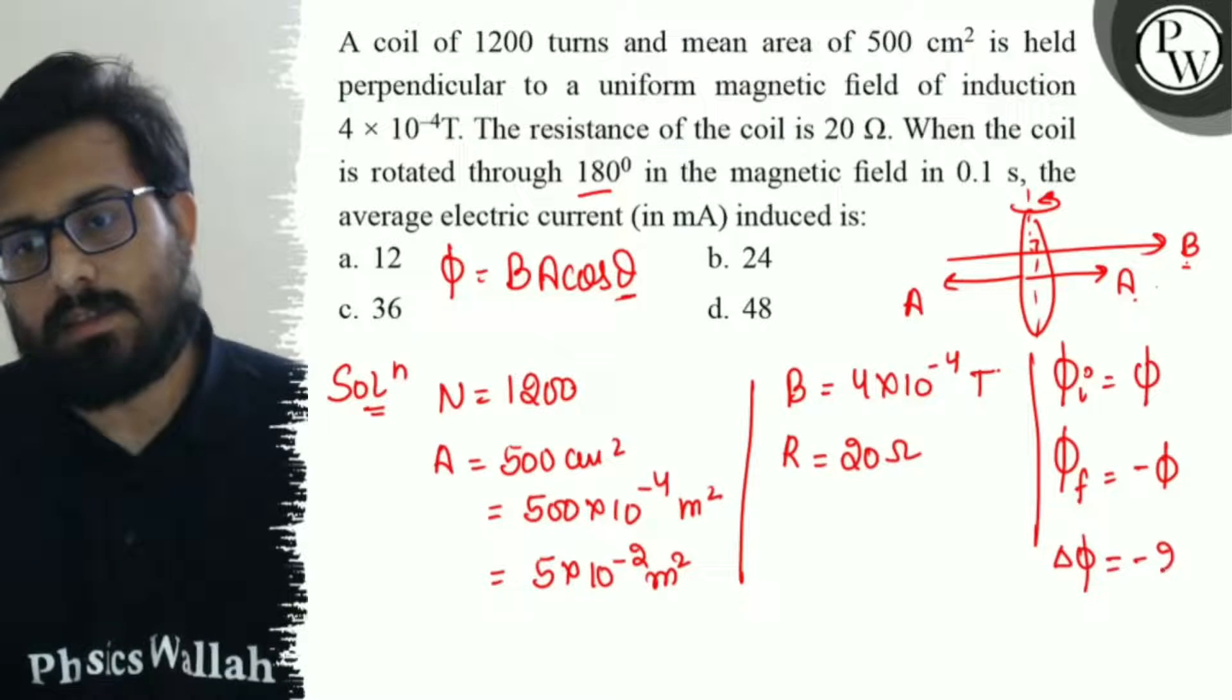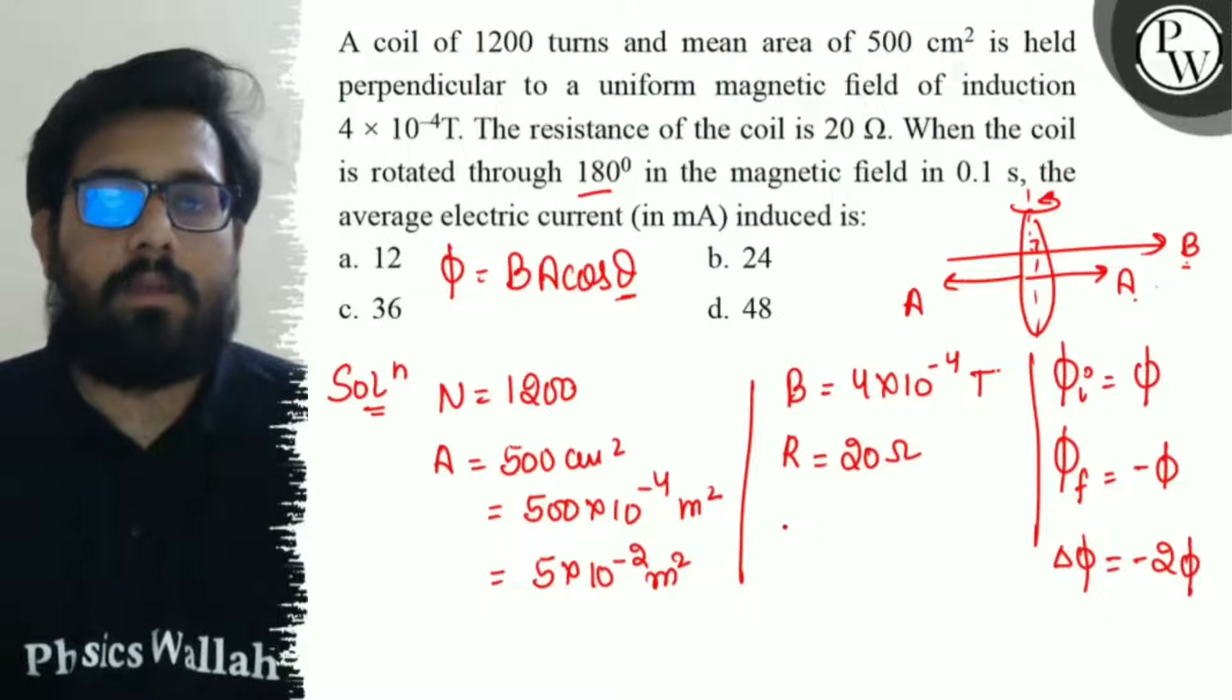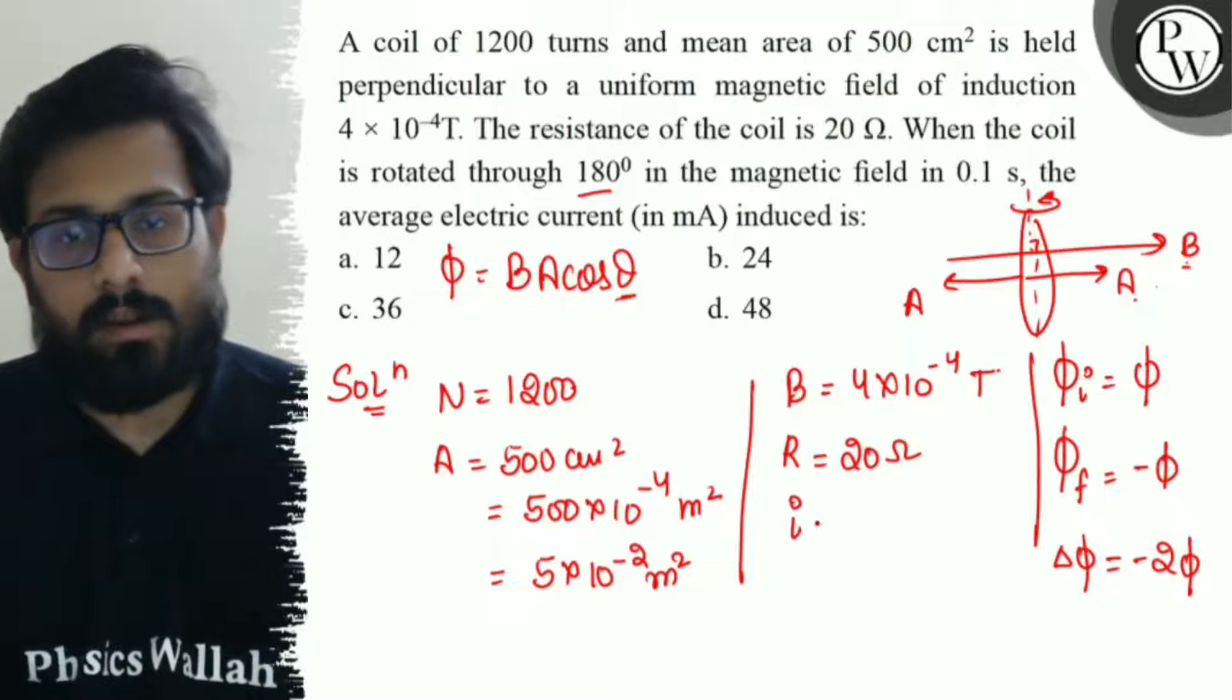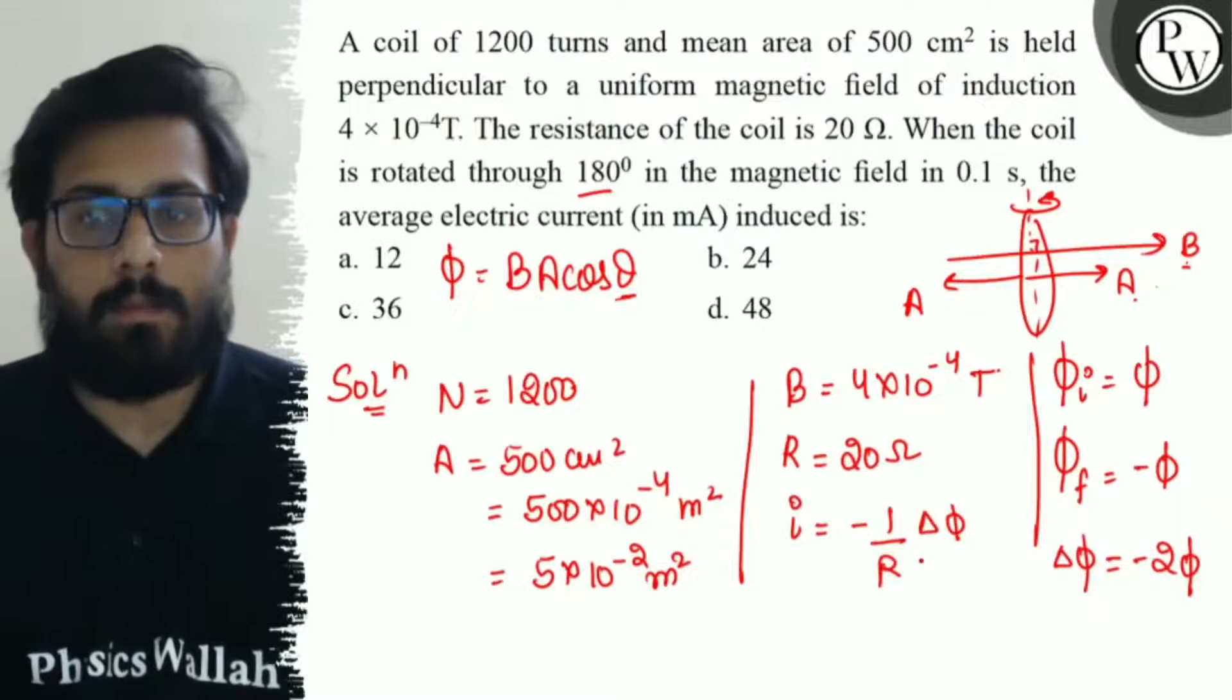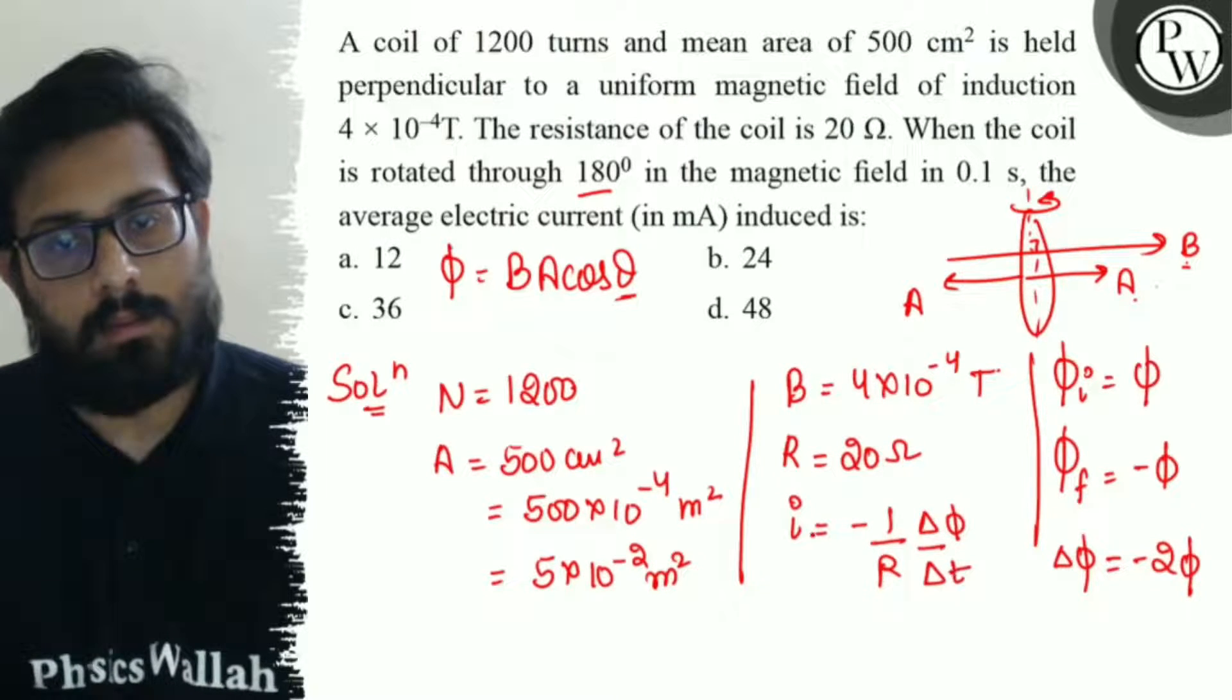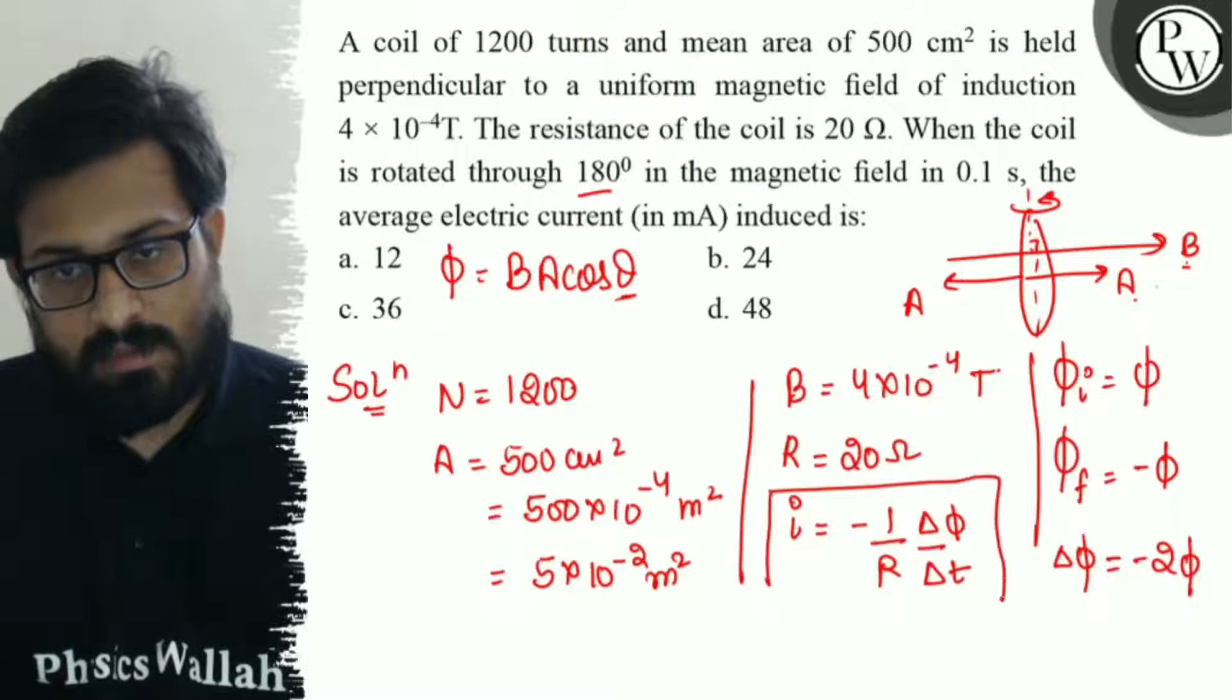We have to calculate the value of electric current: i = -(1/R)(ΔΦ/Δt). So if you consider the direction as well, from Lenz's law we have the formula i = -(1/R)(ΔΦ/Δt).